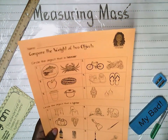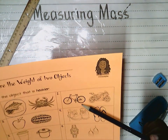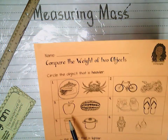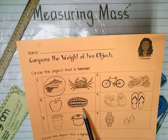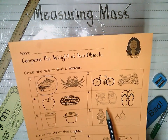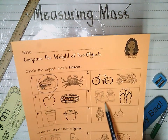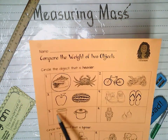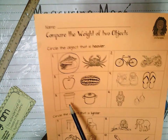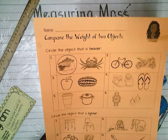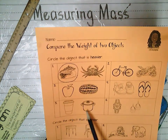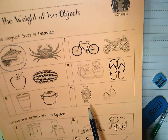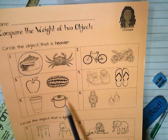Let's look at the other pictures. In number two we have a bicycle and a motorcycle. In number three there's an apple and a watermelon. In number four there's a pair of high-top boots and a pair of flip-flops. In number five there's a coffee cup and a pot. In number six we see a watch and a pair of earrings. For these objects you are going to circle the one that is heavier.